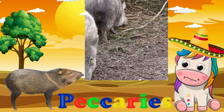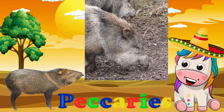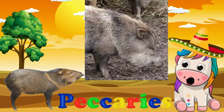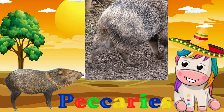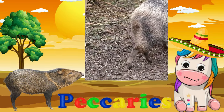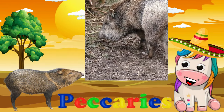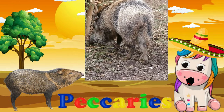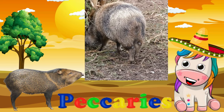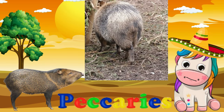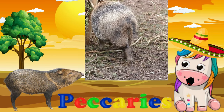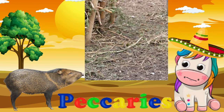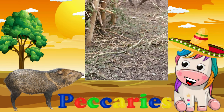A peccary is a pig-like ungulate of the family Tayasudidae. They are found throughout Central and South America, Trinidad in the Caribbean, and in the southwestern area of North America. They usually measure between 90 and 130 centimeters in length, and a full-grown adult usually weighs about 20 to 40 kilograms.